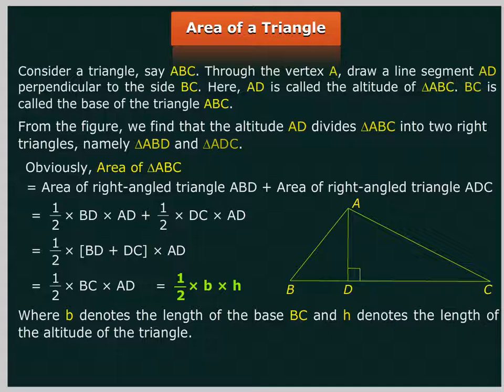Where B denotes the length of the base BC and H denotes the length of the altitude of the triangle.